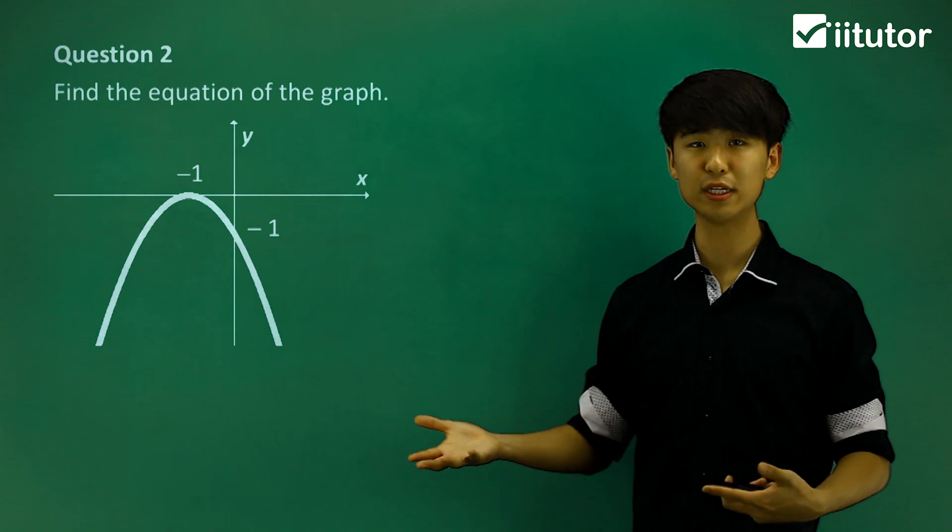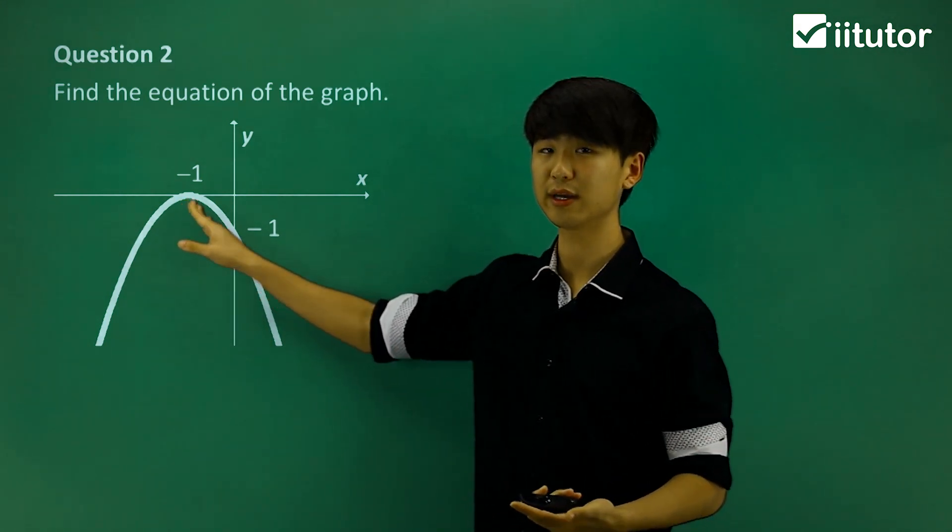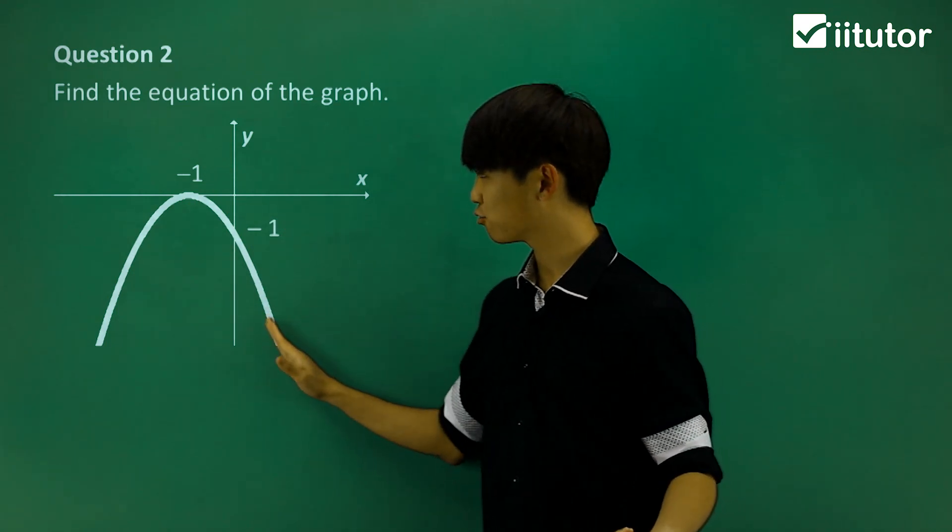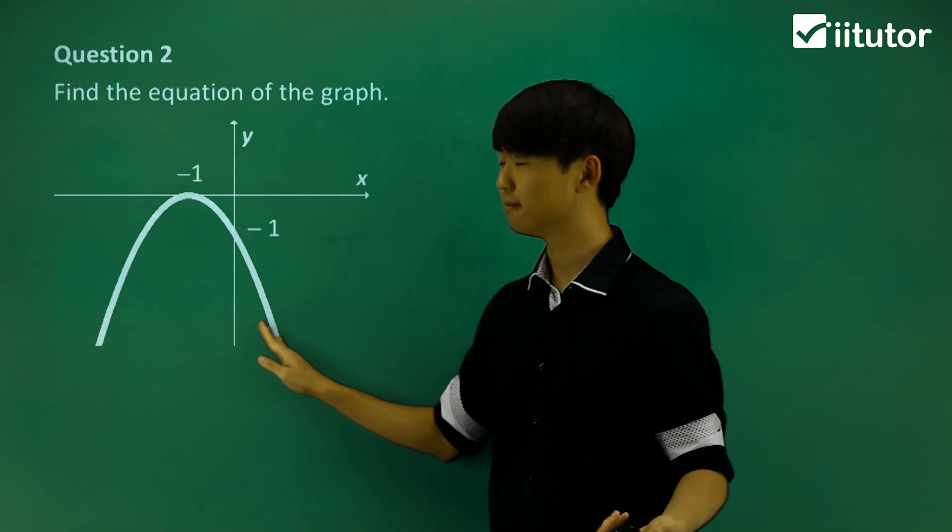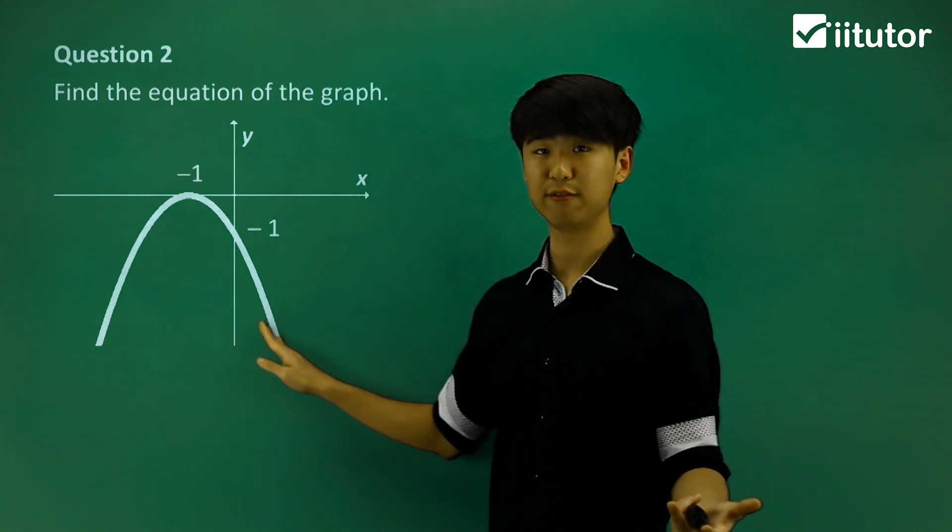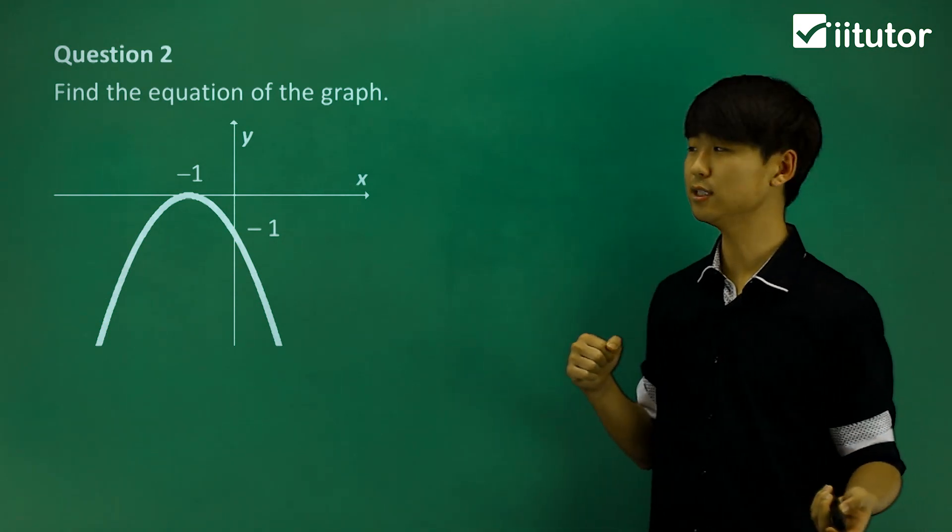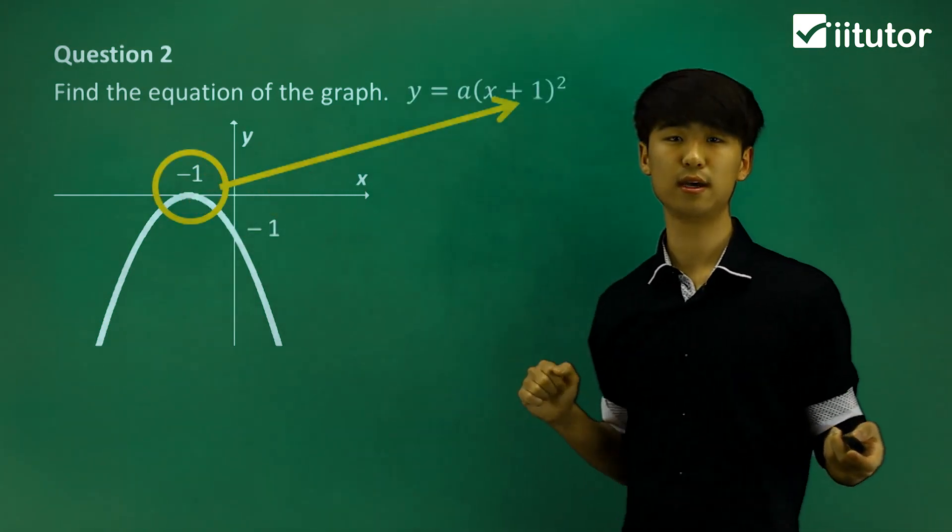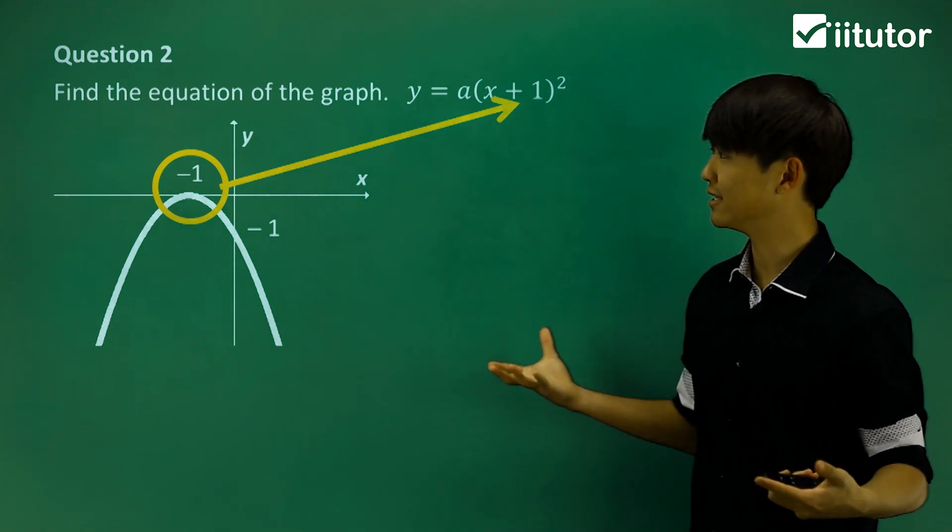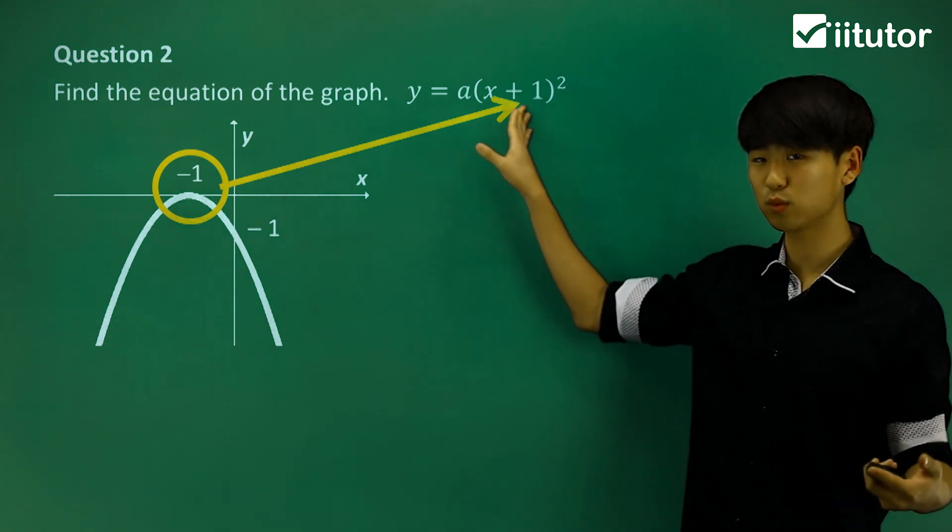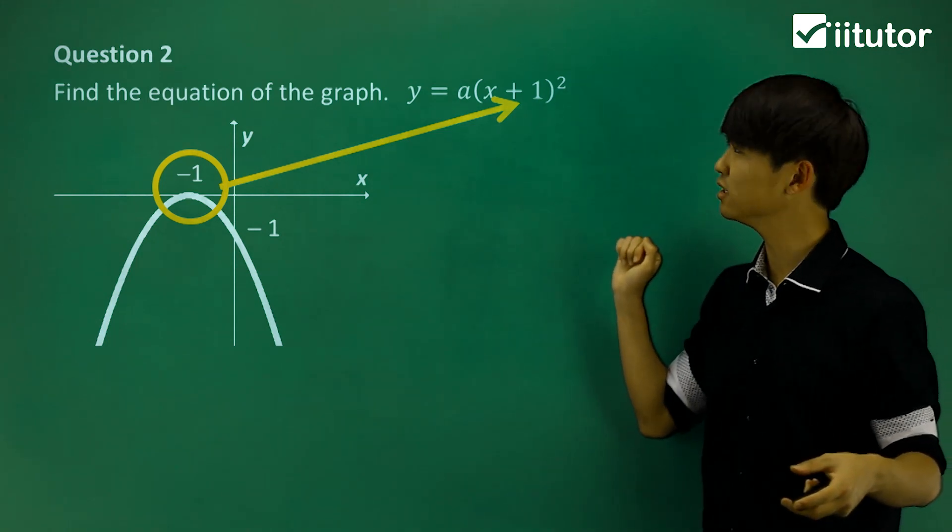So finding the equation of this one. We can already see that there's a double root at x minus 1. Now we know that because this parabola is touching and reflecting in a way that there is a double root at x equals negative 1. So x equals negative 1 is our only intercept, and it's a double root. So we're going to write (x plus 1) squared. So we found the equation.